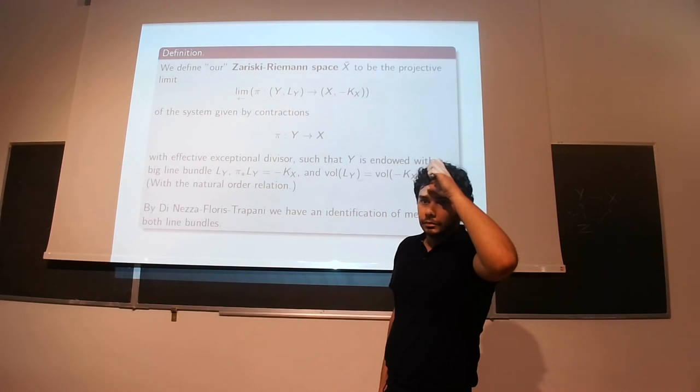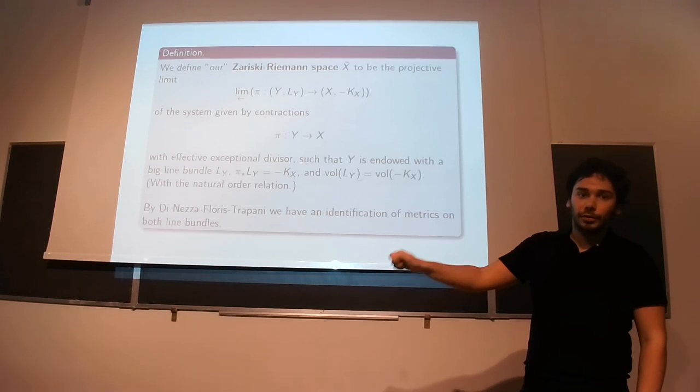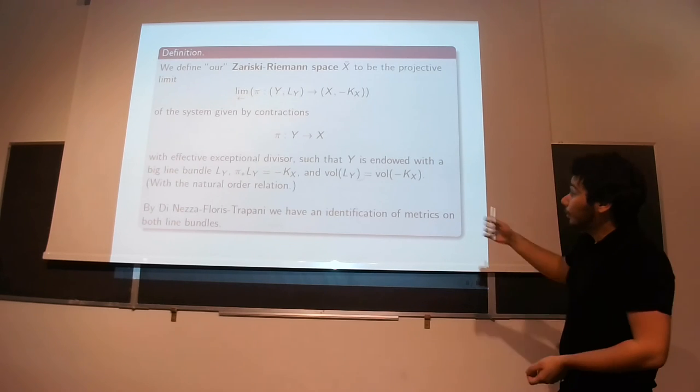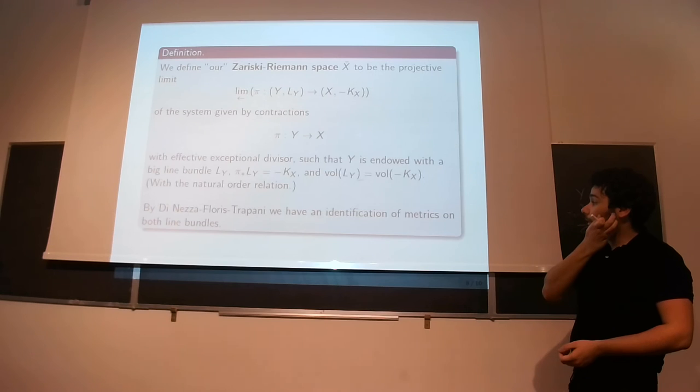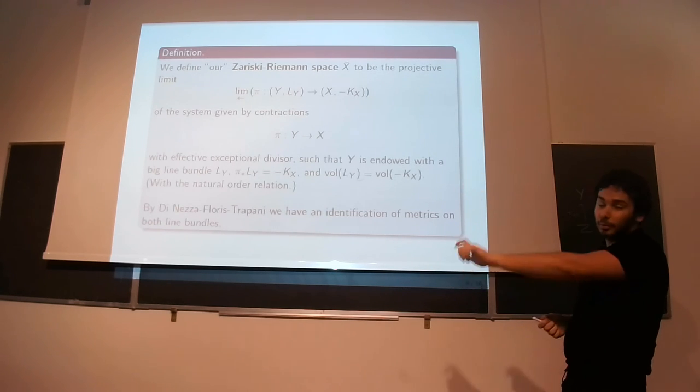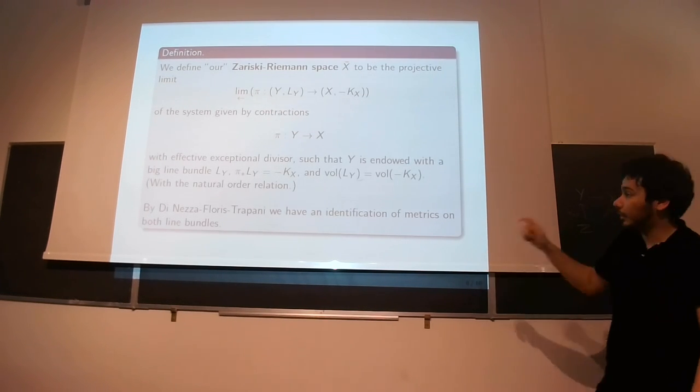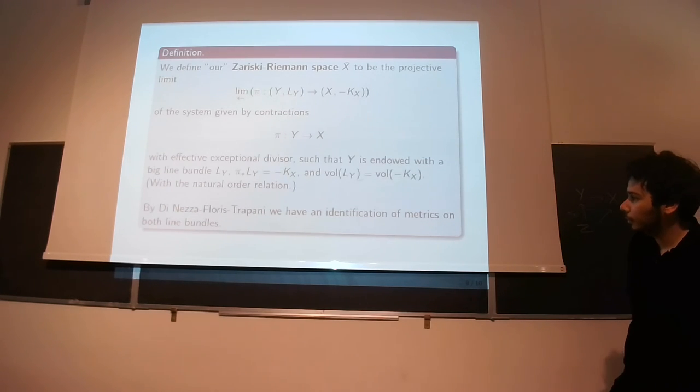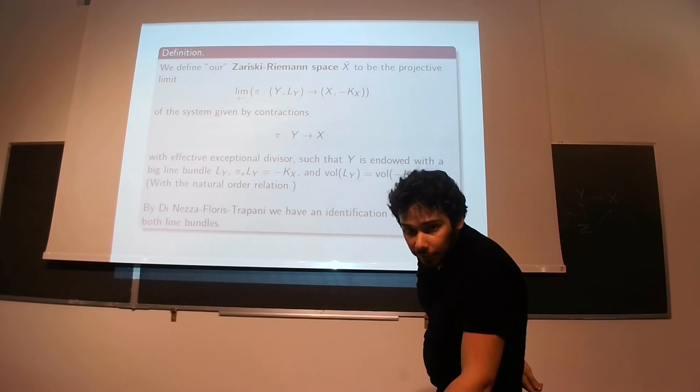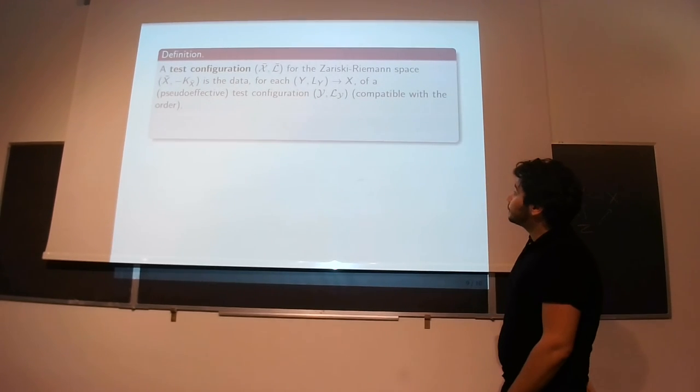So if we have something like this, then there is an observation from the work of Boucksom which says that we have an identification of positive metrics on the line bundle upstairs and on minus KX. So we can work in the same way with the line bundle and on minus KX. And it identifies the metrics with minimal singularities. So that's kind of why we want to add this condition.